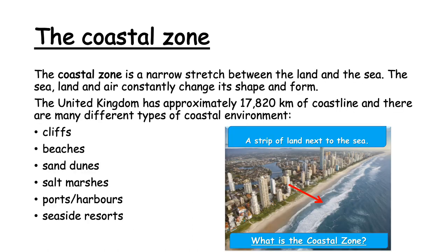Starting with lesson one on coasts, we're going to look at the coastal zone. The coastal zone is simply the strip of land next to the sea — the narrow stretch between the sea and the land. The sea and the land are constantly changing shape and form, and therefore the coastal zone is constantly changing. In the United Kingdom we have approximately 17,820 kilometres of coastline, and we'll be using some UK coastline examples and case studies throughout the unit.